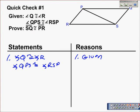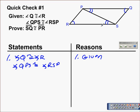Here we have another proof. We're given that angle Q is congruent to angle R, and that angle QPS is congruent to angle RSP. We have to prove, marked in red, that segment SQ is congruent to segment PR. To do this, we need to establish that triangle PQS is congruent to triangle SRP.